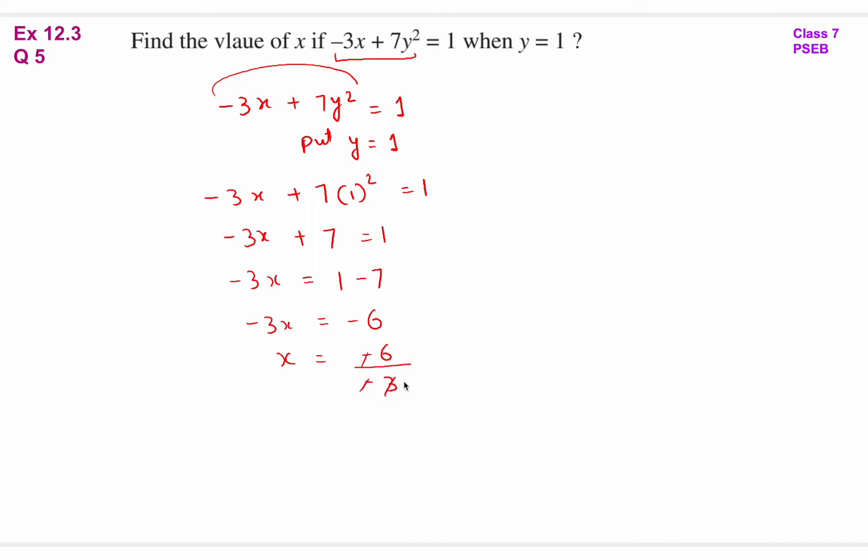-3x = 1 - 7 = -6. So x = -6 ÷ -3. Minus minus cancel out. 3 ones are 3, 3 twos are 6. So x = 2. This is the answer.